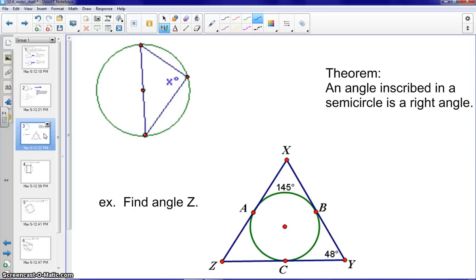The last theorem: an angle inscribed in a semicircle is a right angle. So here, again, if we know AC is the diameter, therefore arc AC would be 180. Angle X would have to be 90 degrees. So therefore, it would be a right angle. Again, quite a few of those were review. So let's jump to some examples here.